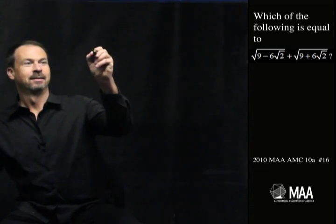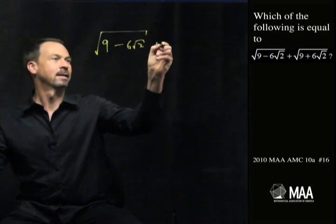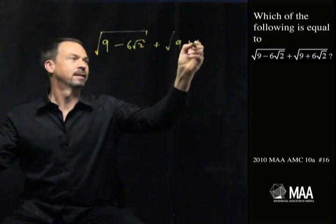Well, here's the quantity we wrote on the board: 9 minus 6 times the square root of 2, that, plus the square root of 9 plus 6 square root of 2.